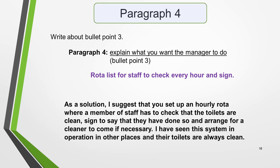Paragraph 4 addresses the third bullet point, which is to explain what you want the manager to do. My idea for this was a rota list for staff to check every hour and sign. Here's the idea developed into a paragraph: 'As a solution, I suggest that you set up an hourly rota where a member of staff has to check that the toilets are clean, sign to say that they have done so, and arrange for a cleaner to come if necessary. I have seen this system in operation in other places, and their toilets are always clean.' Now we just need to add the sign-off we decided on earlier, and our letter is complete.